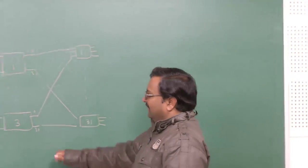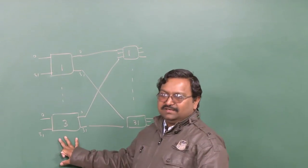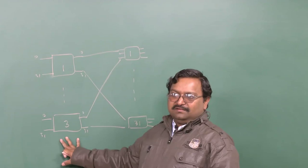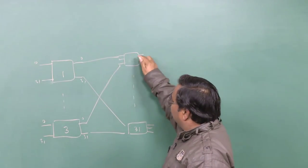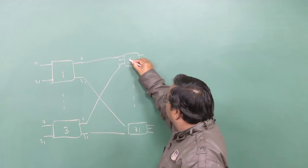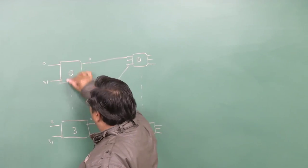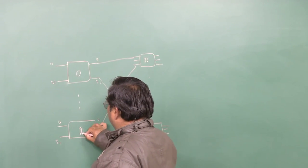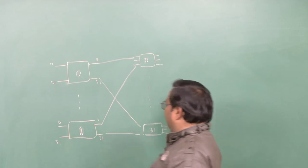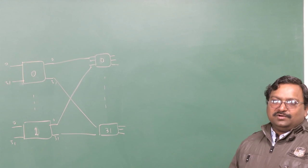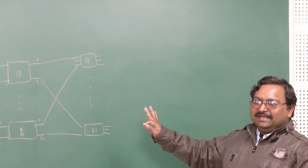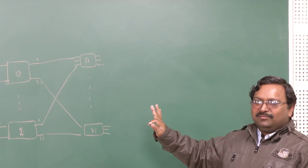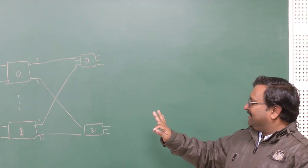I have just converted my time switch to an equivalent space switch representation. Both are equivalent — now I am not using a time switch, just space switches labeled 0 to 31 for 0 to 2 ports. Now if you find a blocking configuration here, it is very simple. Let port 0 be connected to a particular port — that means port 0, time slot 0, mapped to port 1, slot 31.